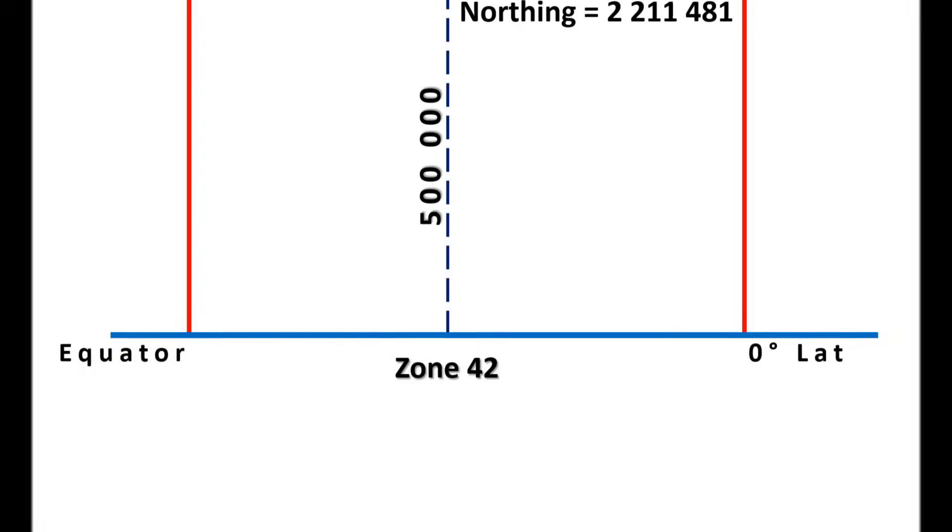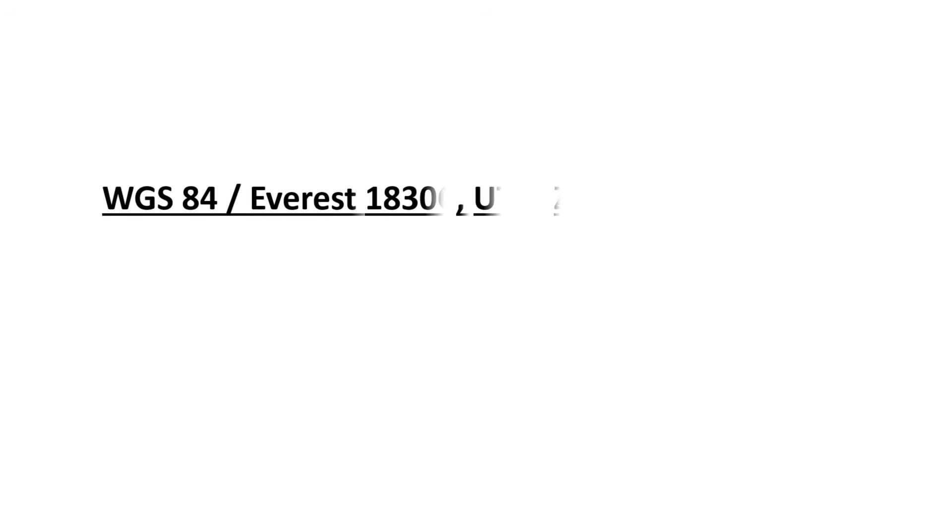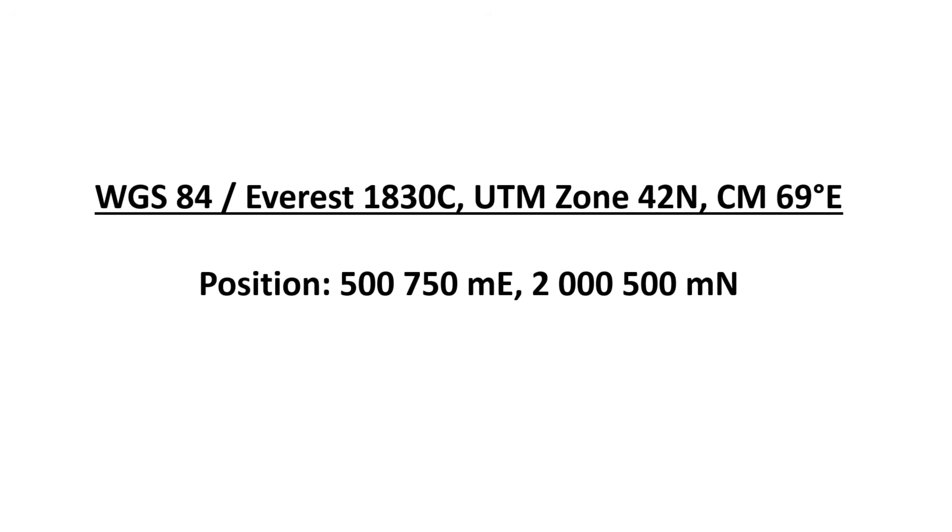So if you want to report your UTM position, you should put this into the header first: ellipsoidal model WGS 84 or Everest 1830, then UTM and zone 42 North, Central Meridian 69 degrees East or West. Then you must write your coordinate as Easting 500,750 and Northing 200,500 — this is just for an example.